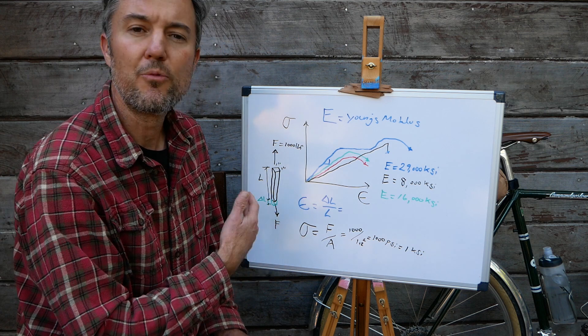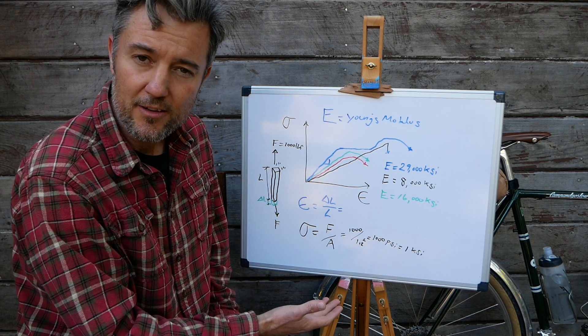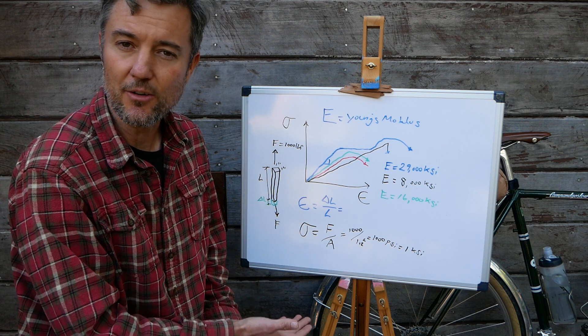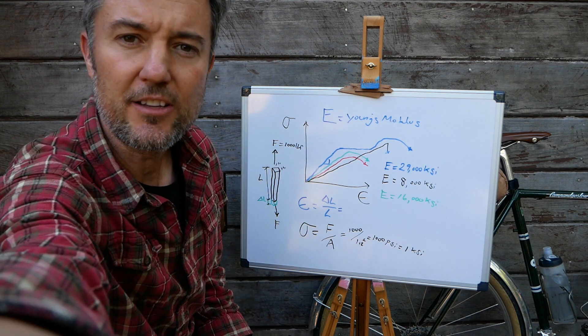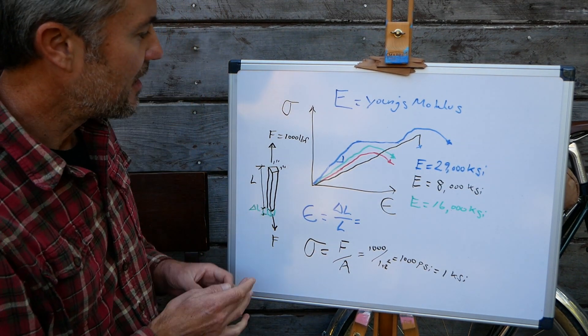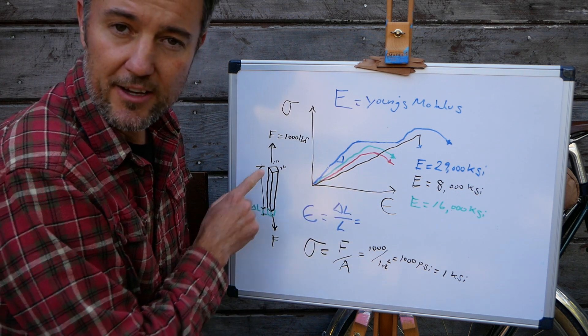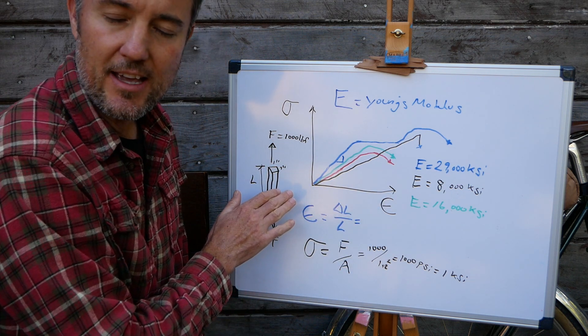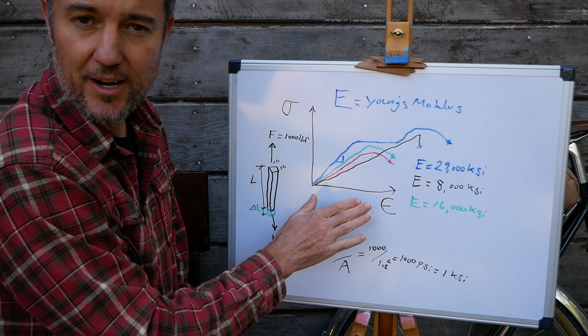And I think it'll help really clarify what we're trying to talk about when we talk about steel or carbon. So let's take a little bit closer look here of these diagrams. So up at the top, I have an XY plot. And this is what is known as a stress strain diagram.